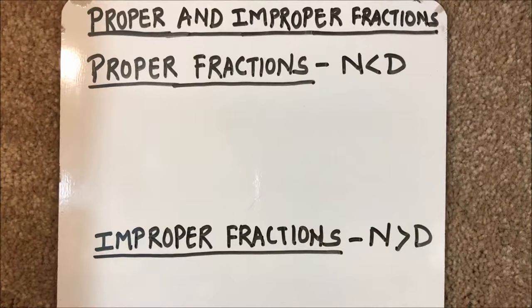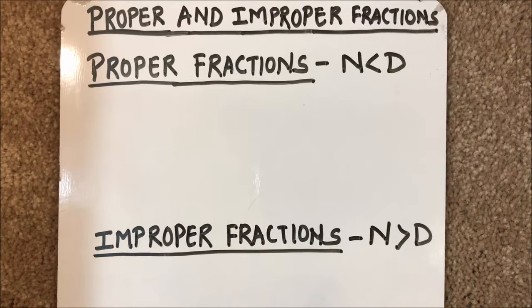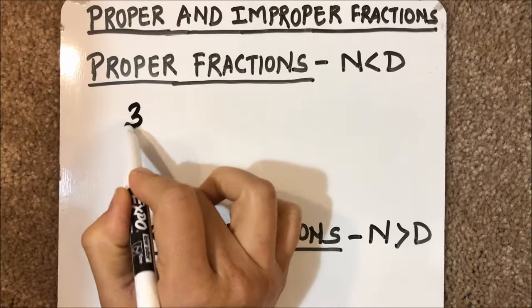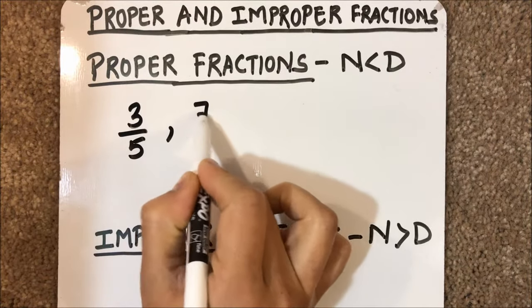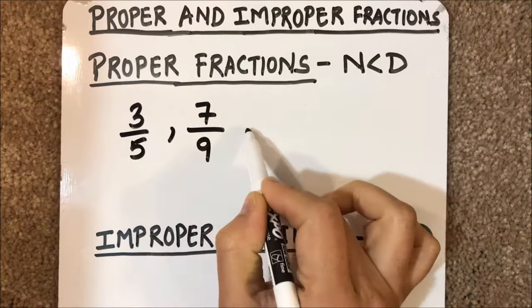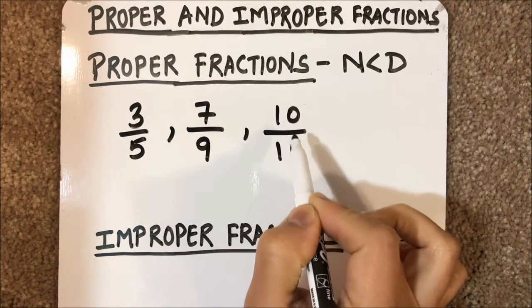Today I am going to tell you about proper and improper fractions. Proper fractions are fractions in which the numerator is less than the denominator. For example, 3 over 5, 7 over 9, and 10 over 11 are examples of proper fractions.